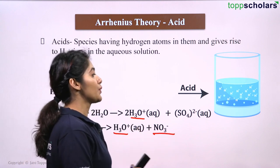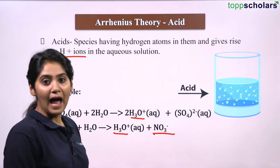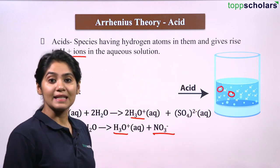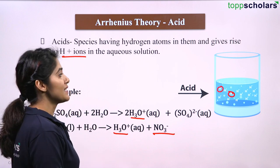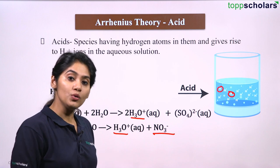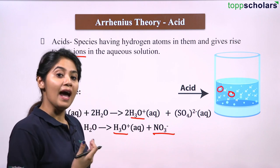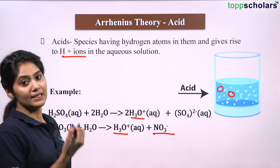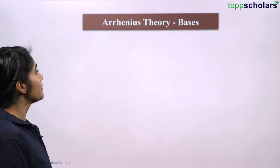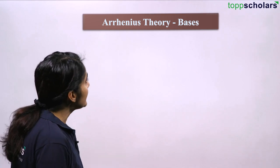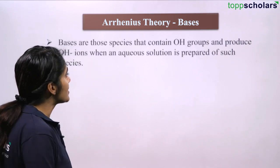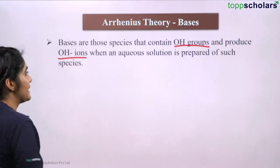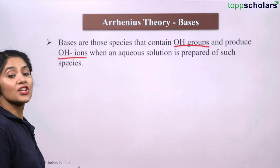In aqueous solutions where acid is added, the number of H+ ions increases because it releases H+ ions, and that is why we can say this is an acid — the amount of hydrogen ion in that solution has increased, which reduces the pH, turning it into an acidic solution. Now let us see what Arrhenius theory says about bases.